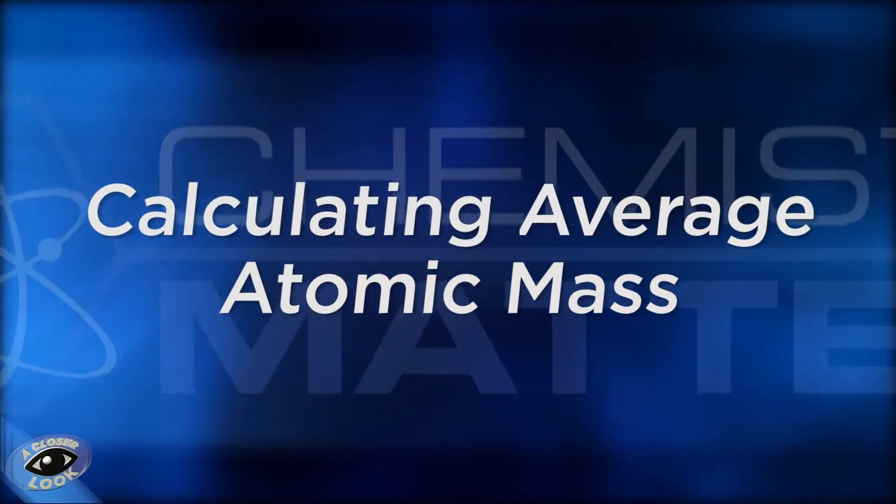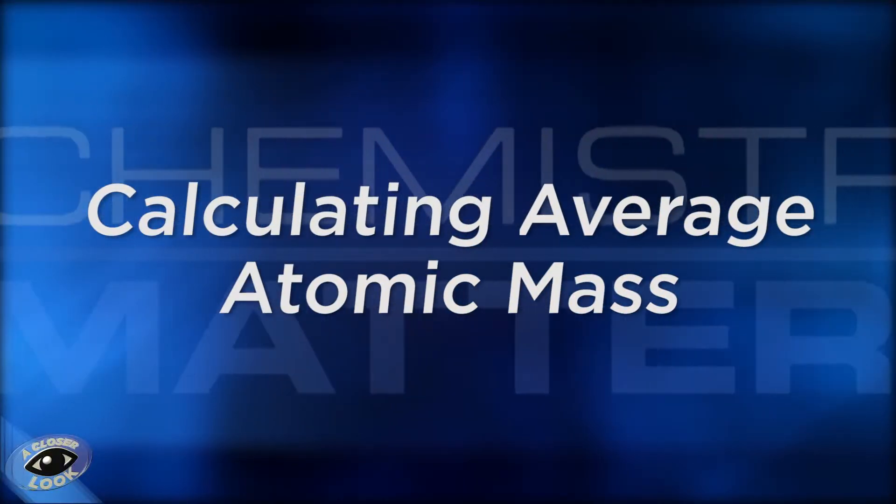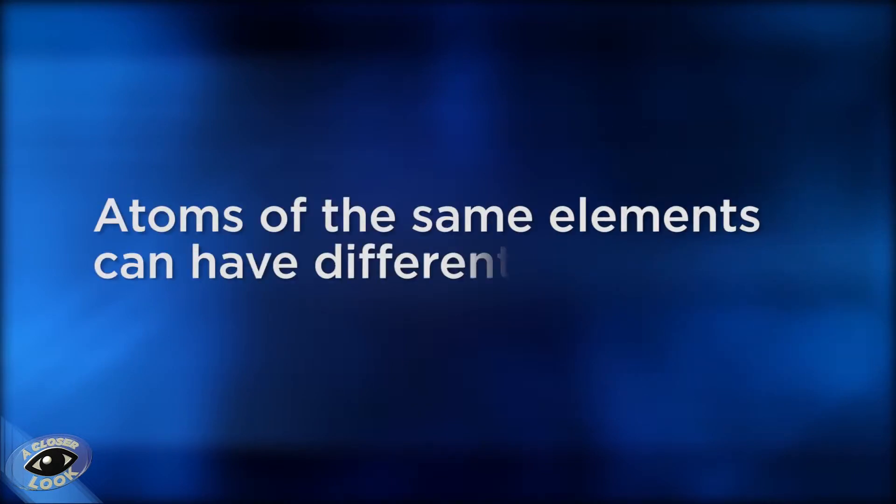In this closer look, we'll explore how to calculate the average atomic mass of elements. Atoms of the same element can have different numbers of neutrons. When they do, they're called isotopes.